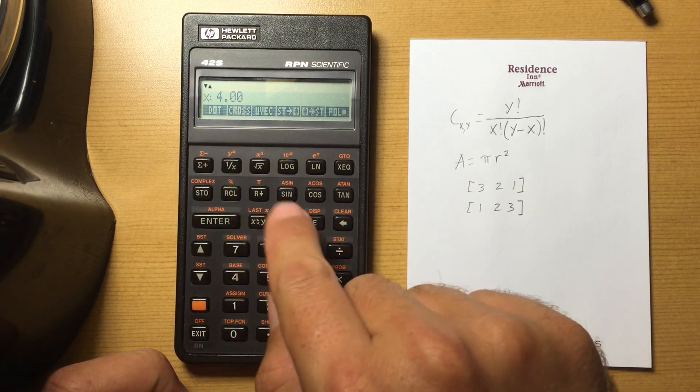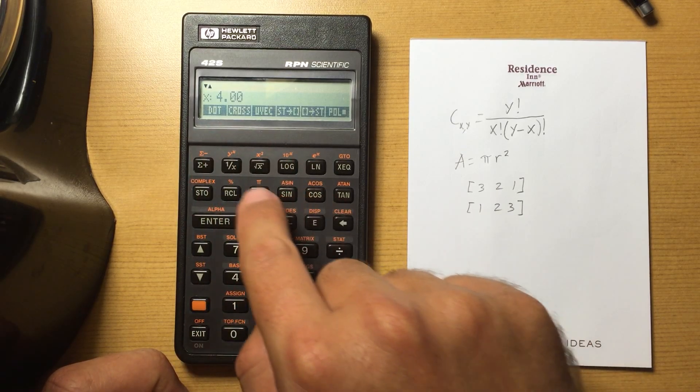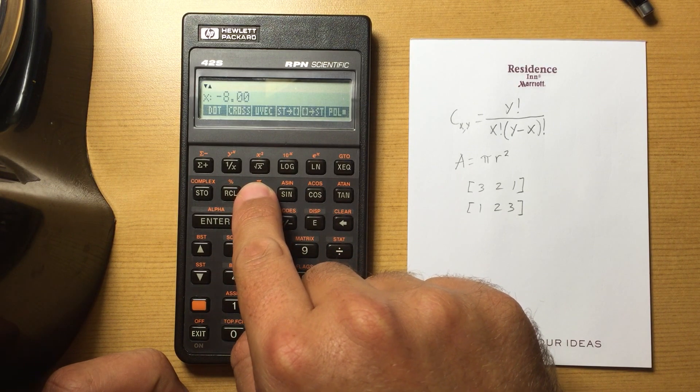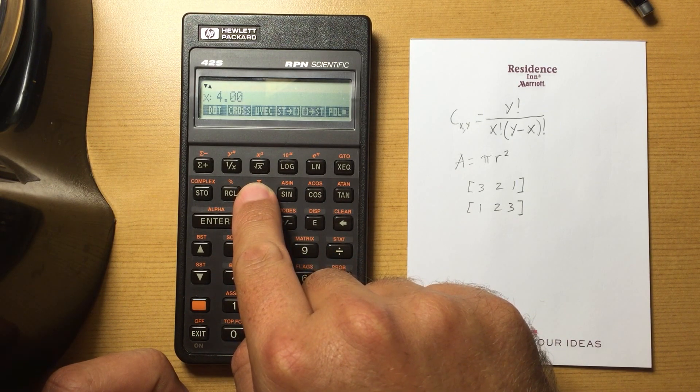So now I've got four for x, negative eight for y, and four for z.